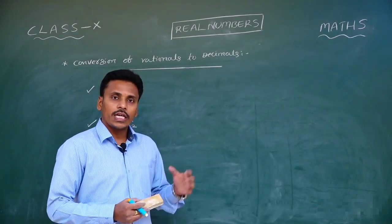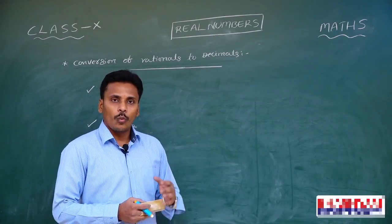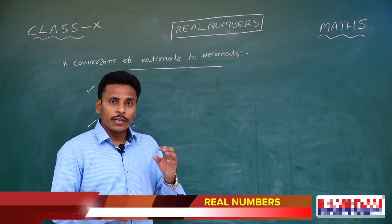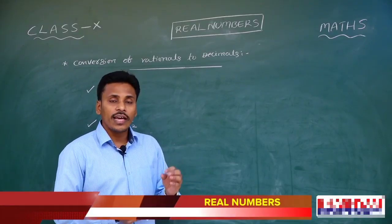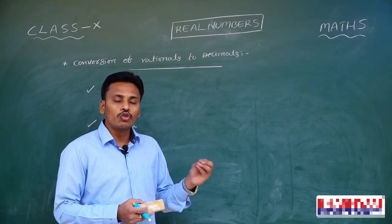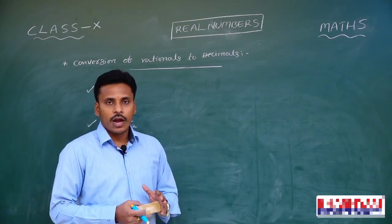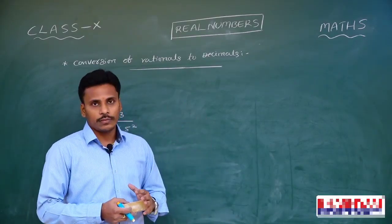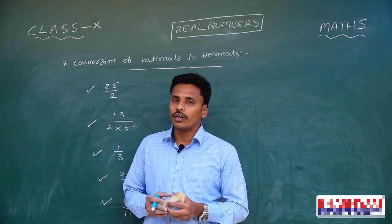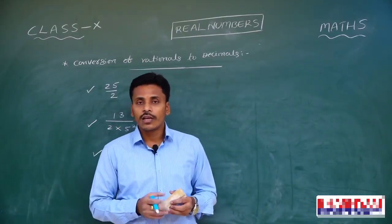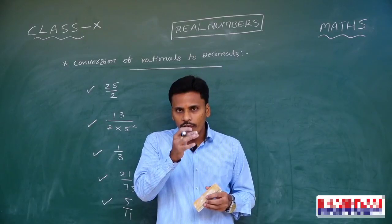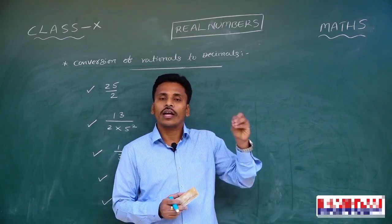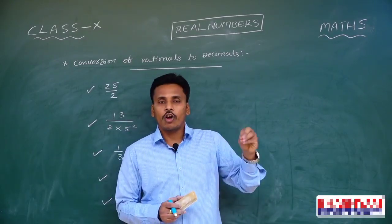Hello students. In the last mathematics session we learnt about the conversion of decimals to rationals, and at the end we observed that terminating decimals, when converted into rationals, have denominators of the form two multiples into five multiples. Now in this class we are going to convert rational numbers into decimals, and at the end I will generalize a statement about which type of rationals are terminating and which are non-terminating.